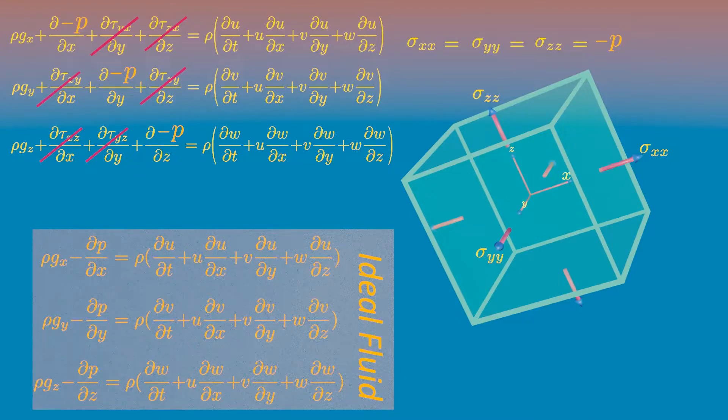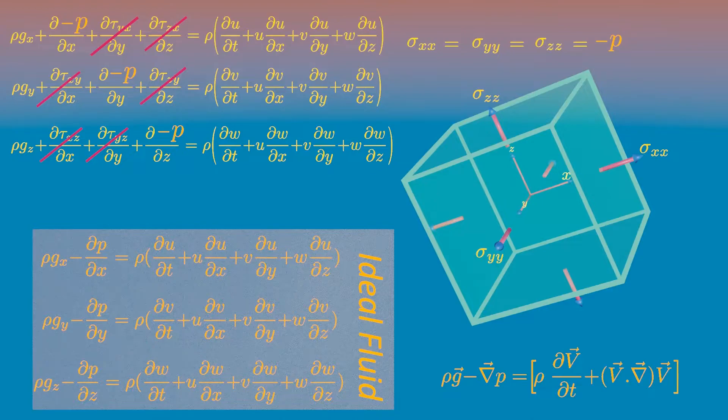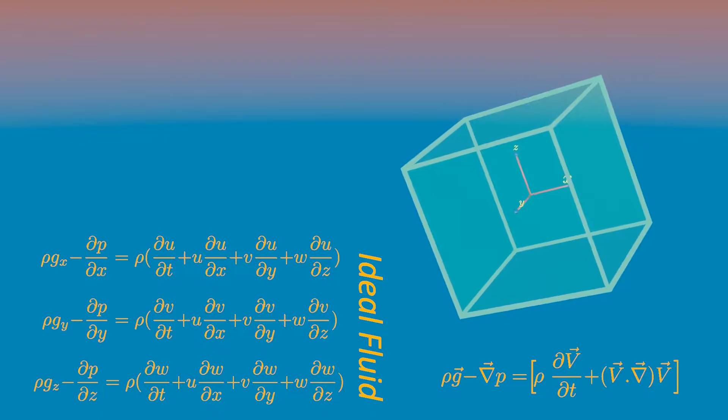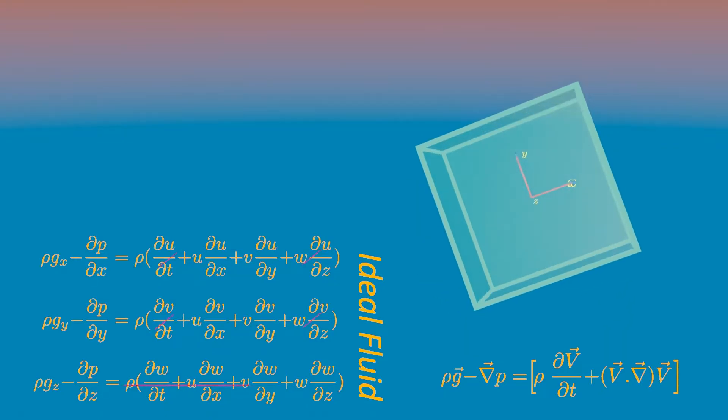Using gradient operator, we can also write it in a more compact form. In many cases we will have steady, two-dimensional flow, and the z component of velocity equals zero.